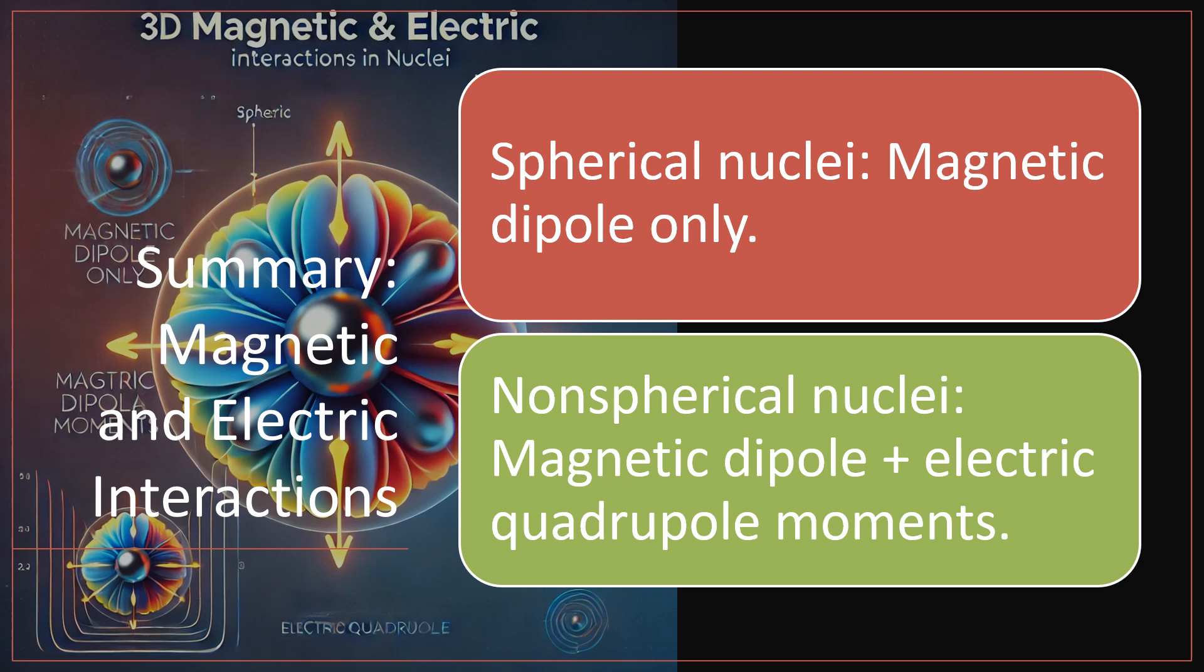Nuclei interact with both magnetic and electric fields. These interactions depend on their charge and spin properties. By understanding these interactions, scientists can analyze molecular structures and study materials at an incredibly detailed level.